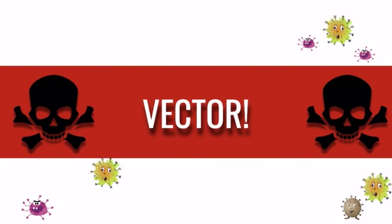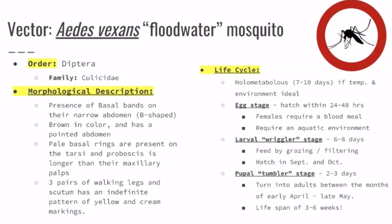First, we have the vector. Our group's vector was Aedes vexans, also known as the floodwater mosquito. The order is Diptera and the family is Culicidae. Some of the most specific characteristics are the presence of basal bands on their narrow abdomen, and they're also in a B-shape. The mosquito itself is brown in color and has a pointed abdomen. Some of the basal rings are pale, and the proboscis is longer than their maxillary palps. They also have three pairs of walking legs and a scutum with an indefinite pattern of yellow and green markings.